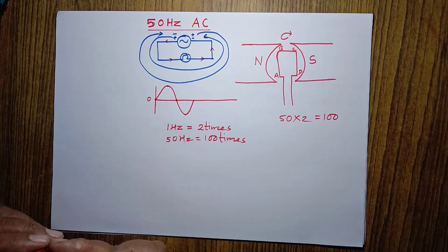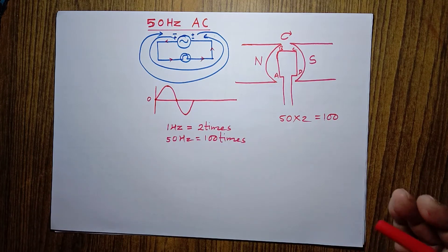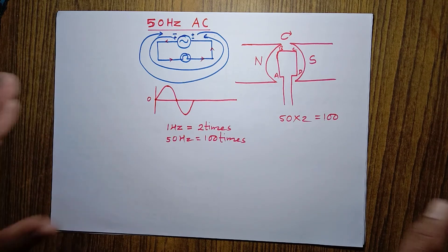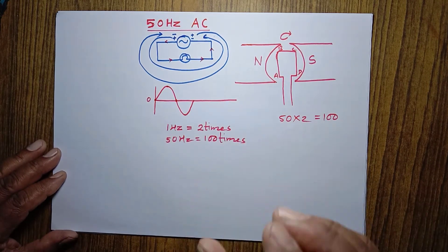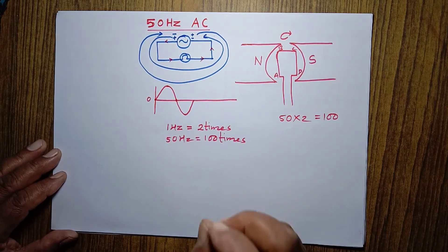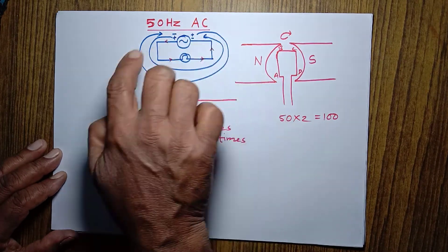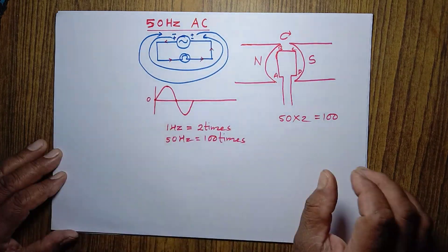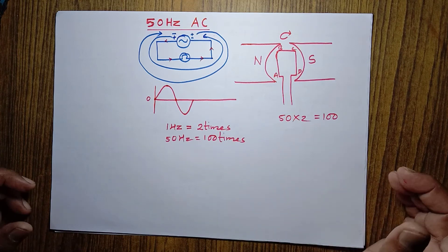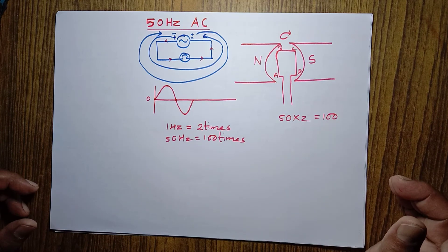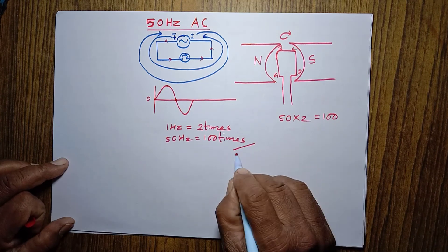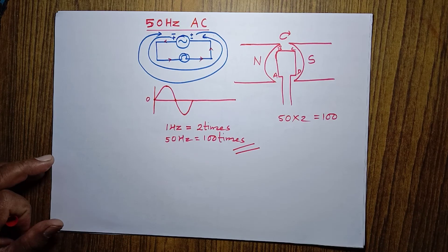So we have to be very clear: if you are asked how many times the direction of current changes when AC has 50 hertz frequency, the answer is 100 times. Thank you.